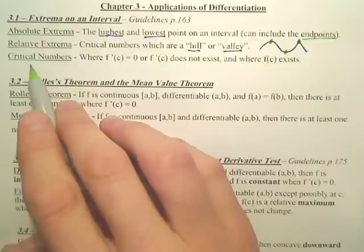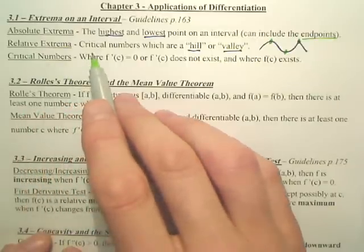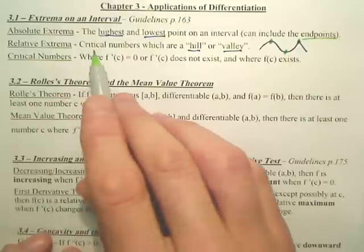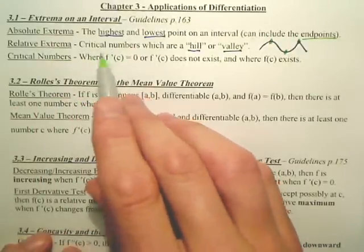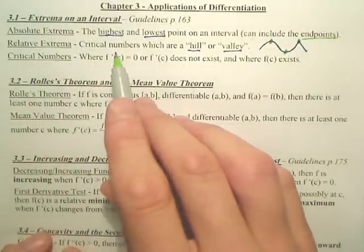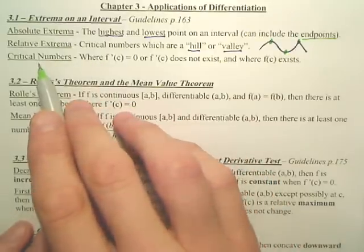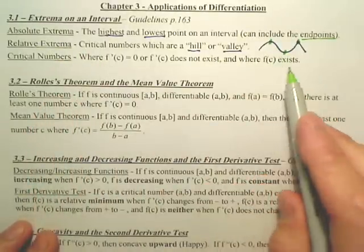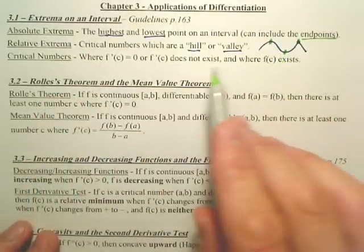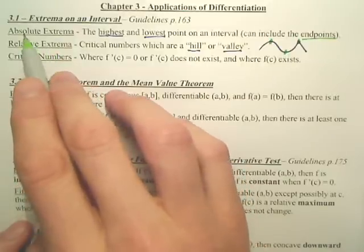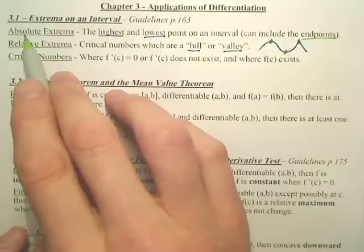What's important about a critical number is they're critical. Critical numbers, relative extrema, happen at critical numbers. Critical numbers give you relative extrema and some other things, but they basically give you relative extrema, which talk about the hills and valleys. And those hills and valleys can be absolute extrema, which are the highest and lowest points, also possibly endpoints.